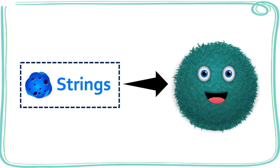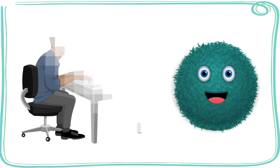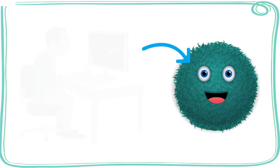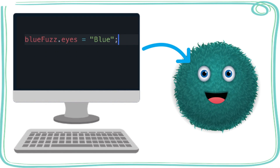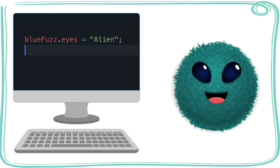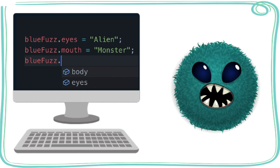When you use variables to store string values in a program, you are often controlling the output, or what the user sees. For instance, let's say one of our programmers at Codable wanted to change what blue fuzz's eyes look like. A programmer could go into the code, find the eyes variable for blue fuzz, and edit the value from blue to alien. This would instantly change the appearance of blue fuzz's eyes, and what all players, including you, would see in Codable. When you design your own game, you will be able to control things like this.